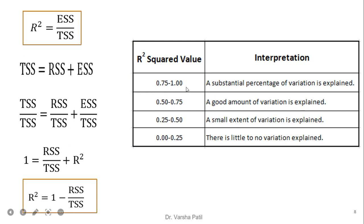If the value varies between 0.75 to 1, then a substantial percentage of variation is explained. From 0.50 to 0.75, a good amount of variation is explained. From 0.25 to 0.50, a small extent of variation is explained by the independent variable to the dependent variable. And if the value of R-square is between 0 to 0.25, there is little or no variation explained.